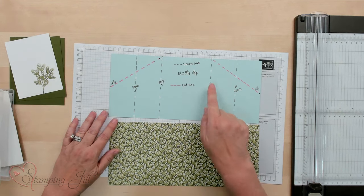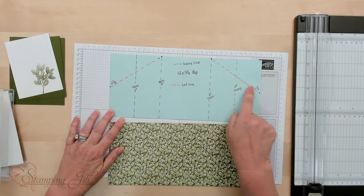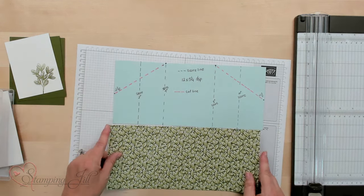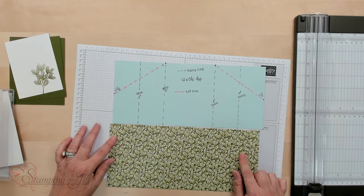And a different detail we're adding to it is we're going to trim this off and we're going to use these two pieces. Let me show you how that works. And I've already pre-cut this 12 by 5 1/4.